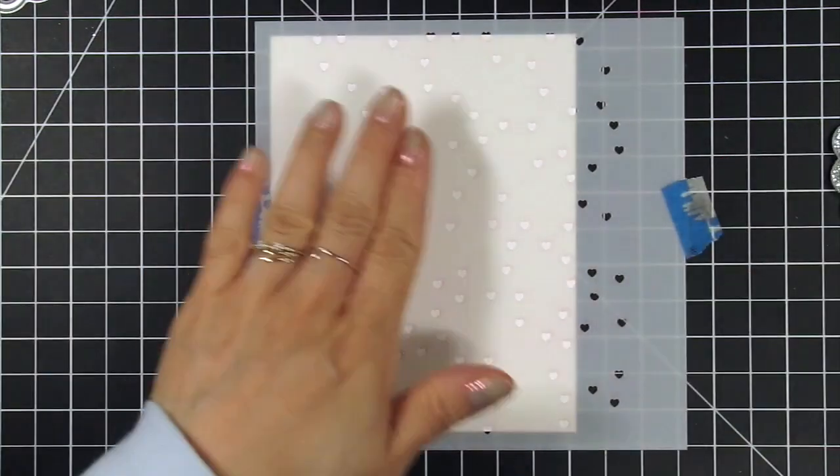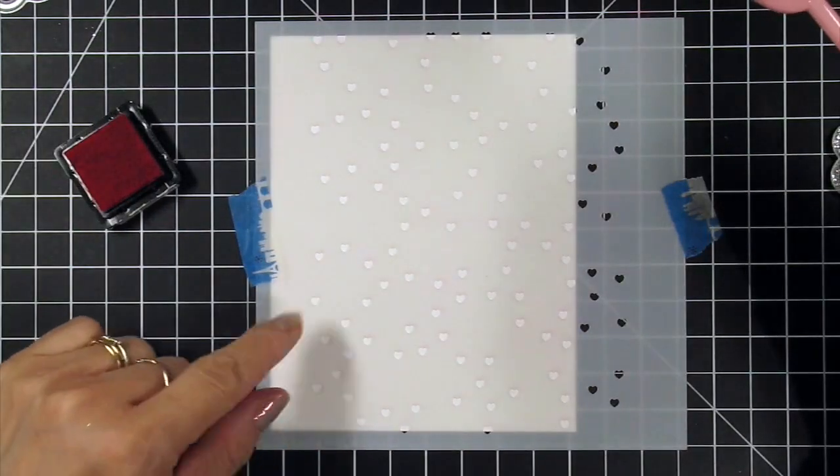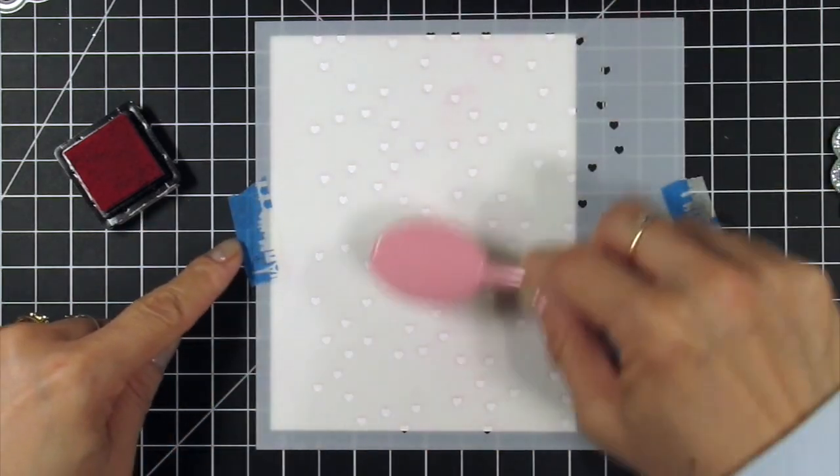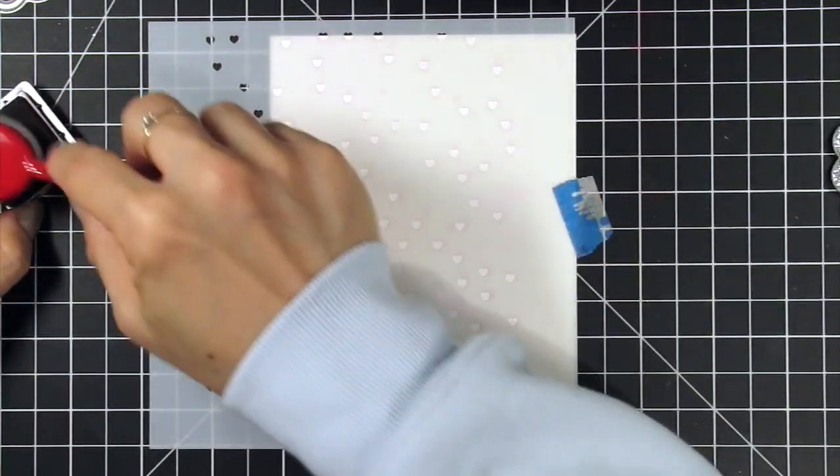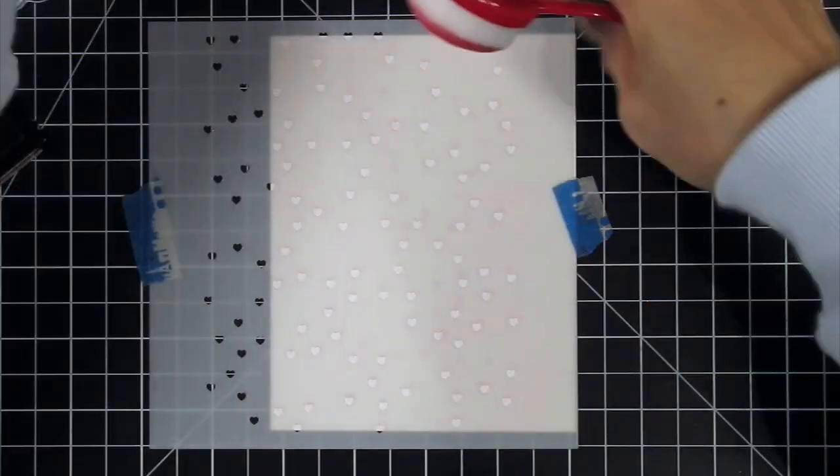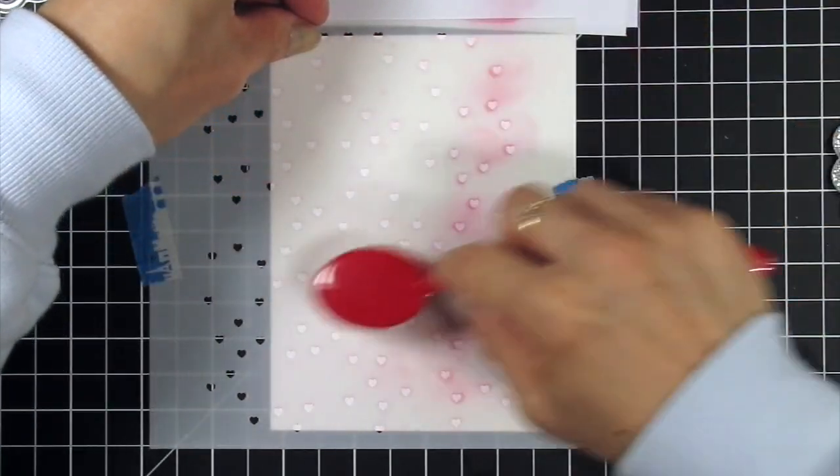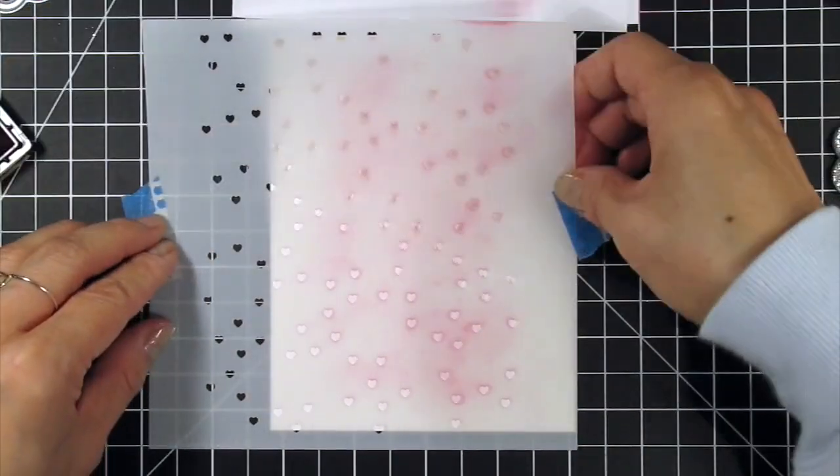For my third card with the shaker element I'm going to use the same stencil but in a different way. I'm going to shift it to one side and use strawberry milkshake ink to add hearts to the center portion of the panel. When that's done I shift the stencil to the left and use cherry pop ink to blend red hearts in the same area to give it a bokeh effect.